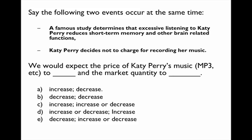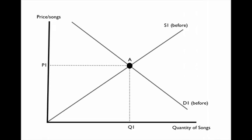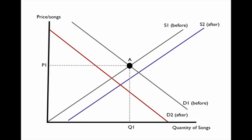Finally, let's do a question where two things happen at the same time. A study determines that listening to Katy Perry music reduces short-term memory, so the demand for Katy Perry music will go down. At the same time, Katy Perry decides not to charge for recording her music, which will probably increase the supply. So both the demand and supply curves are changing. The demand curve going down reduces both the price and the quantity, and the supply curve shifting right increases the quantity and decreases the price.